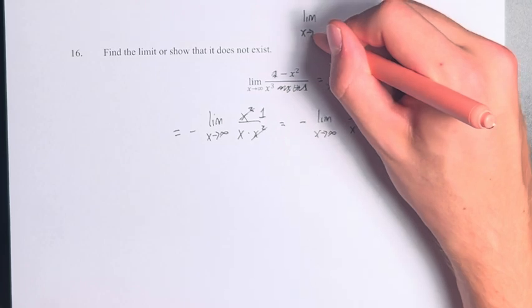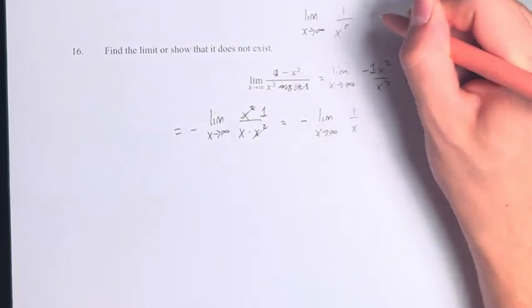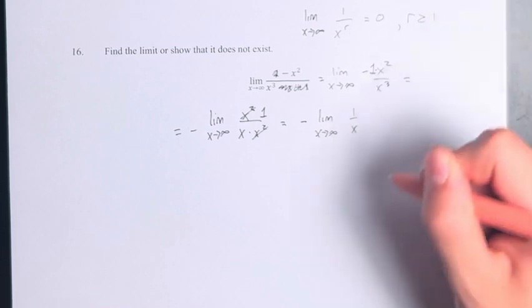The limit as x approaches infinity of 1 over x to the r is equal to 0 when r is greater than or equal to 1.